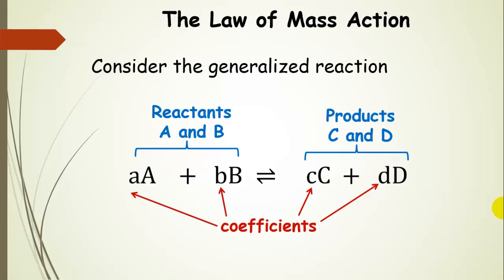Consider this generalized reaction. We have reactants and products, and these lowercase letters are coefficients for each reactant represented by an uppercase letter. So reactant A has lowercase coefficient a, reactant B has lowercase coefficient b. The products are set up the same way: lowercase c for product C and lowercase d for product D.